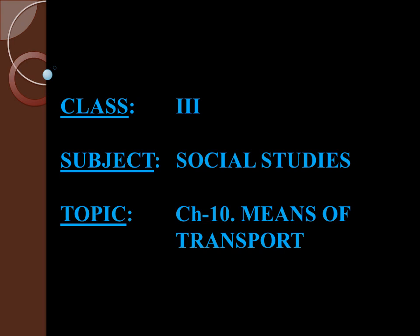In the last class I explained about the means of transport — scooter, bicycle, rickshaw, car, bus, train, ship, or aeroplane. There are mainly three types of transport: land transport, water transport, and air transport. We choose according to the distance to be travelled, the money we can spend, and the time available.